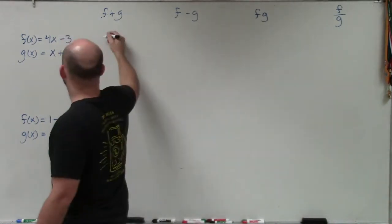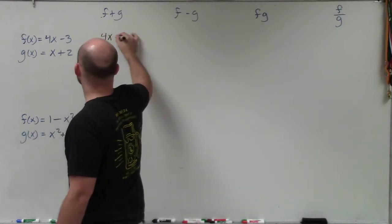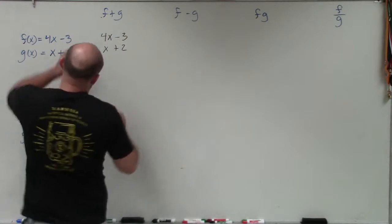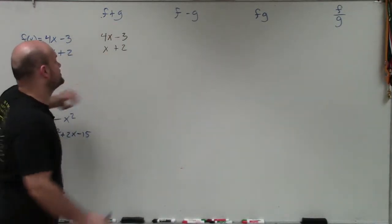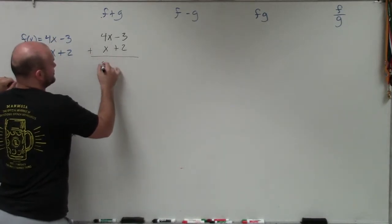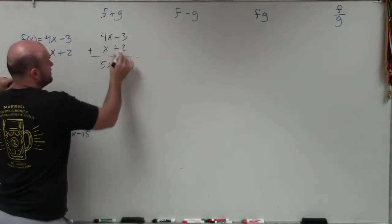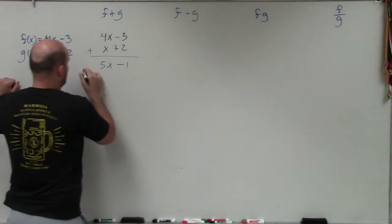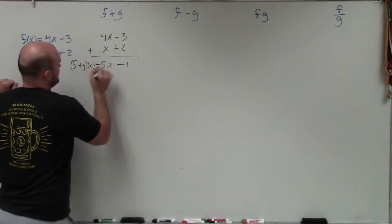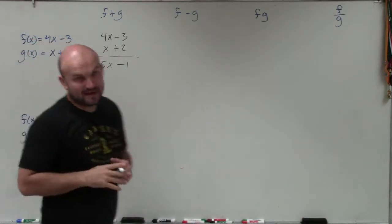So I can add these vertically. Basically, I'm going to take our two functions and align them with their like terms. So you can see here my variables are aligned, and here my numbers are aligned. And I'm basically just going to add them. So 4x plus x is going to be 5x. Negative 3 plus 2 is going to be negative 1. So therefore, f plus g of x equals 5x minus 1.